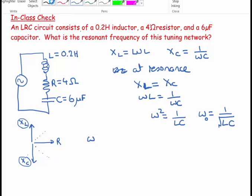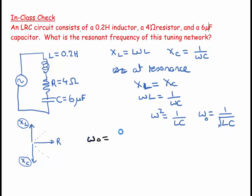let's go to a different colored pen so we can see this. Omega zero, in this case, is equal to 1 over the square root of L. And L is 0.2 times C. And C is 6 times 10 to the minus 6. And so what does that equal?